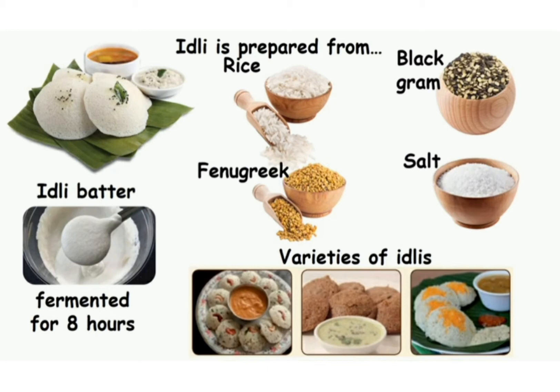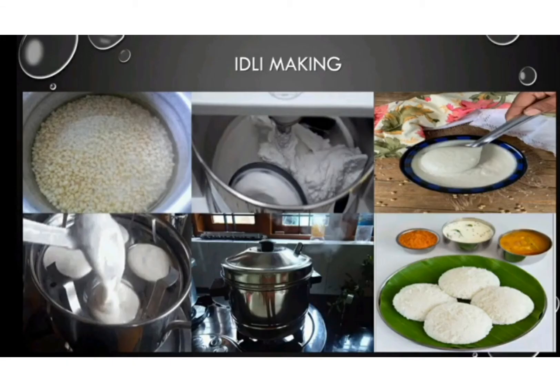The ingredients are rice — that is boiled rice — black gram, black lentils, fenugreek (we say it in Tamil: bendayam) and salt. Idli batter produced from the above things is fermented for 8 hours before use. Idli is cooked by the method called steaming.